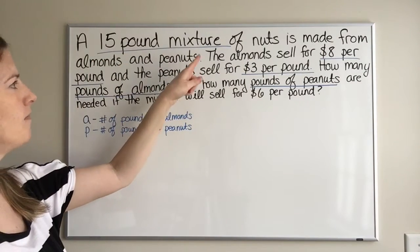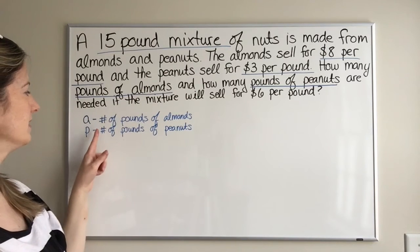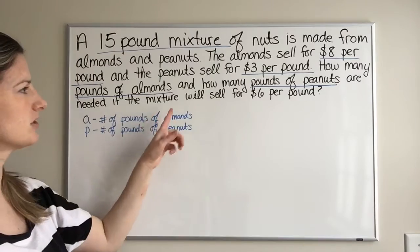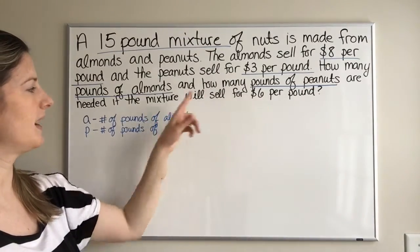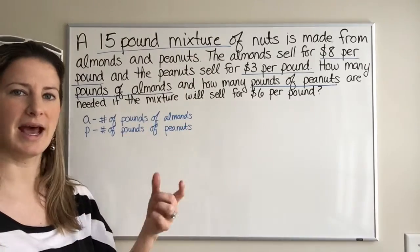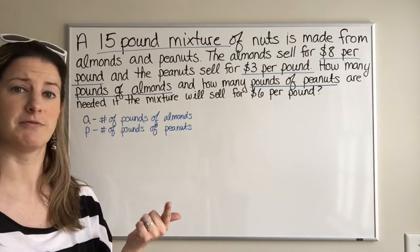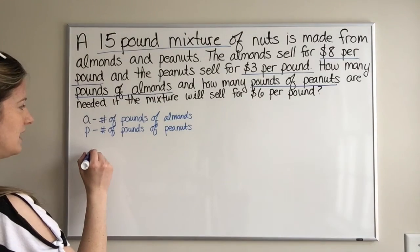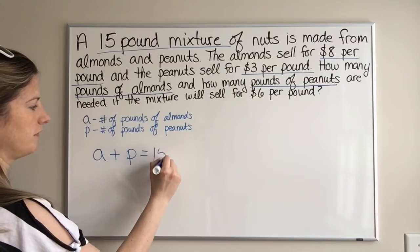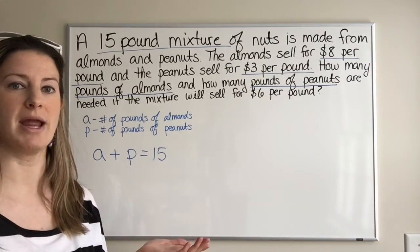A 15-pound mixture: if A is the number of pounds of almonds and P is the number of pounds of peanuts, clearly that 15-pound mixture is made up of a certain number of pounds of almonds and a certain number of pounds of peanuts. So right there we see: A plus P equals 15. Boom — there's your first equation, nice and easy.